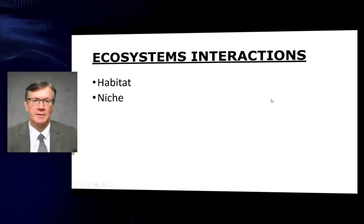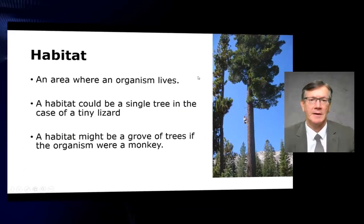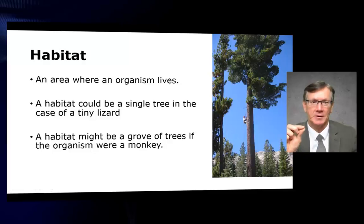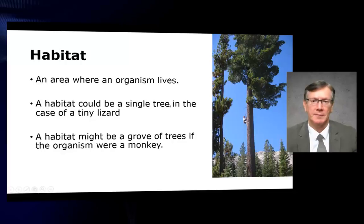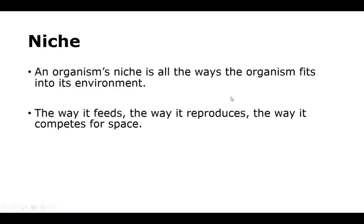Ecosystem interactions: habitat and niche. Habitat is an area where an organism lives. A habitat could be a single tree in the case of a tiny lizard, or a grove of trees if the organism were a monkey. An organism's niche is all the different ways the organism fits into its environment — the way it feeds, the way it reproduces, and the way it competes for space.